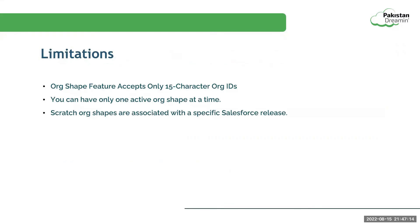Coming to the limitations of org shape: it only uses the 15-character ID of the Dev Hub org rather than the full 18-character org ID, and you can have only one active org shape at a time.